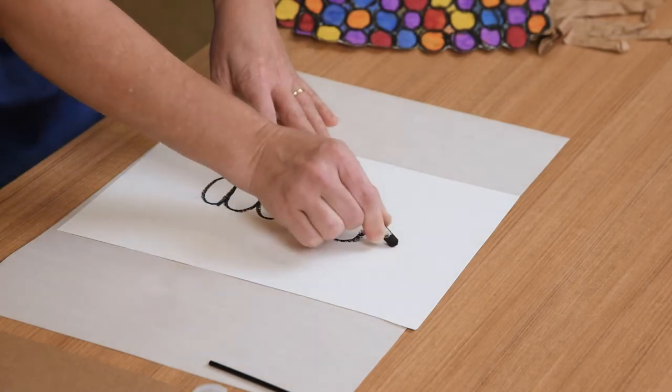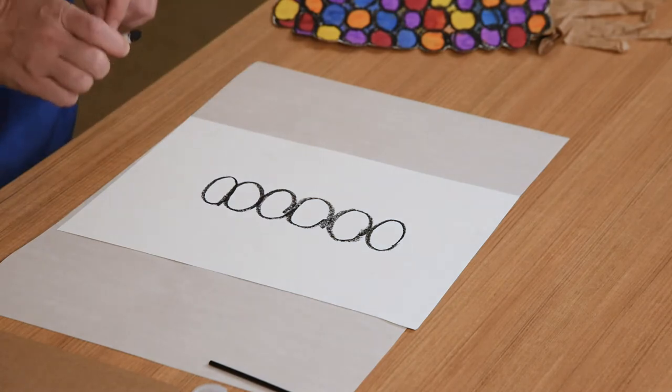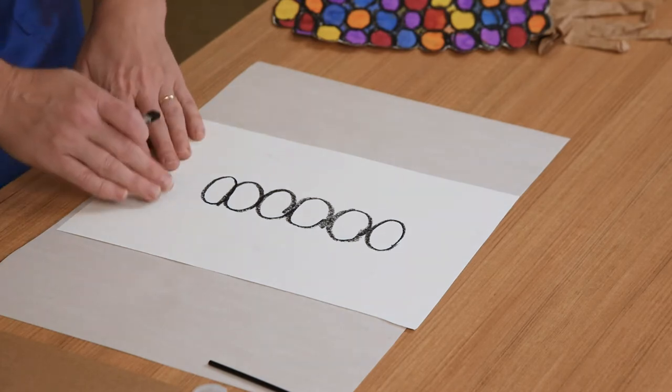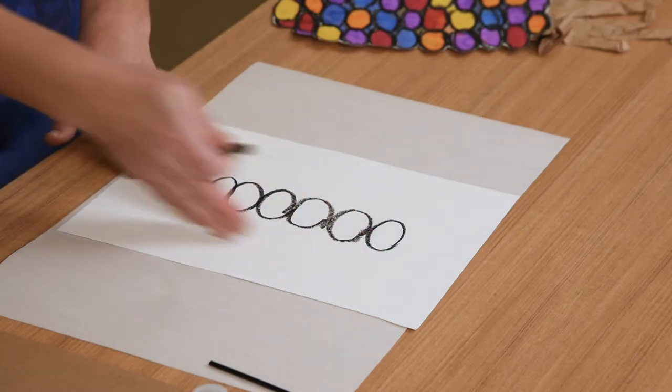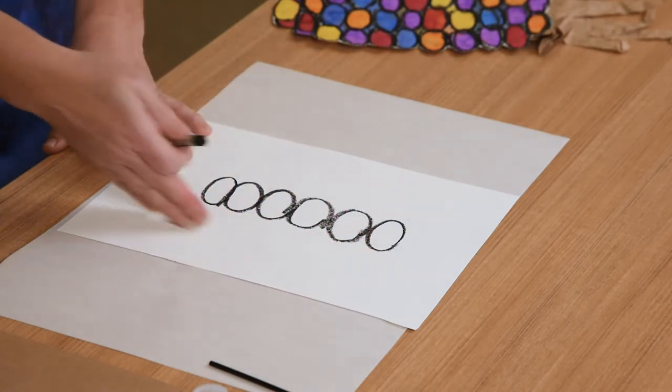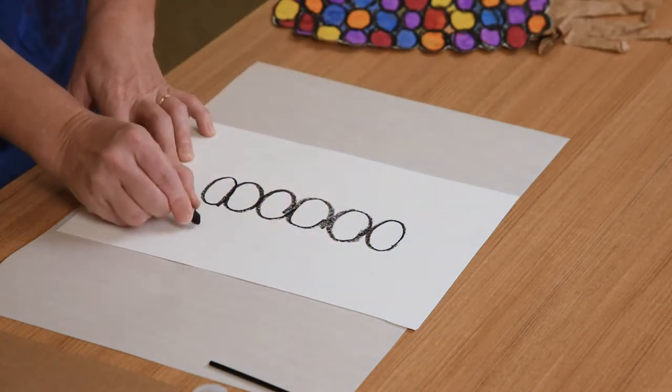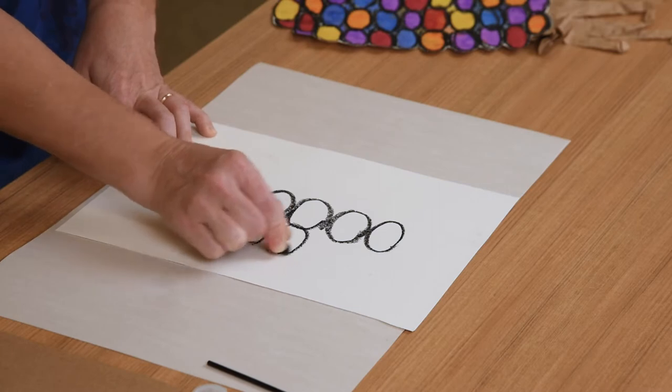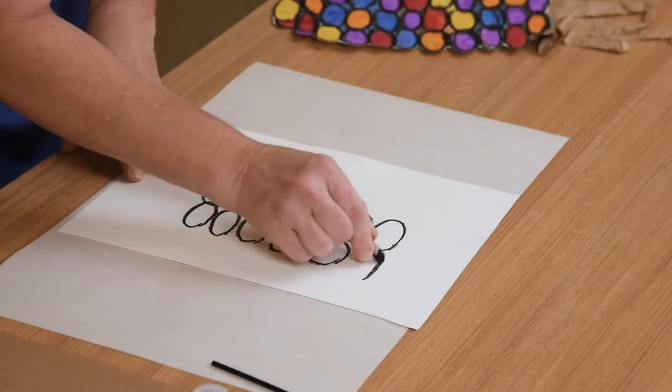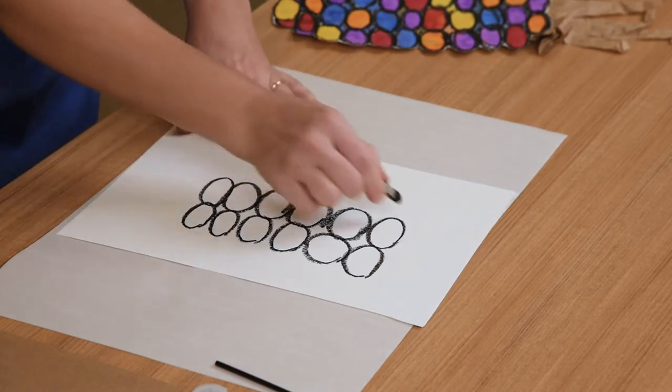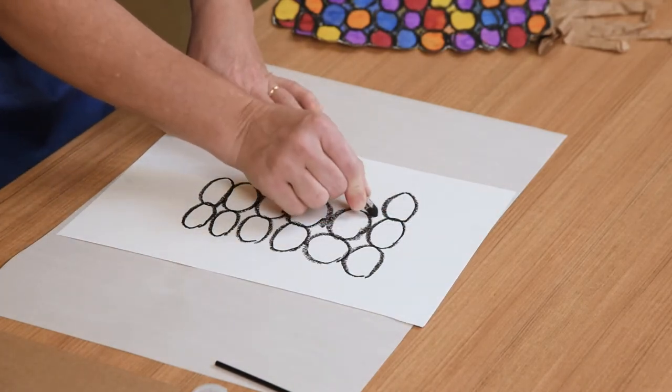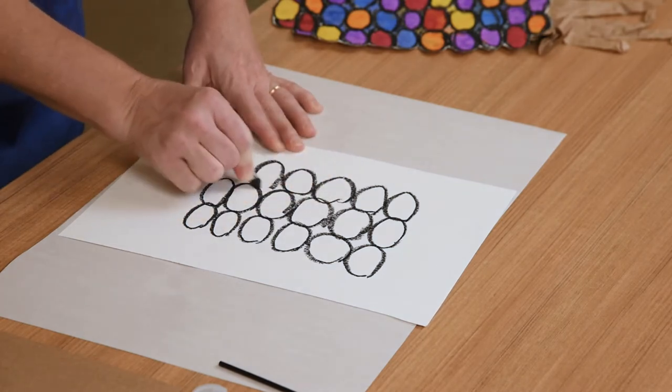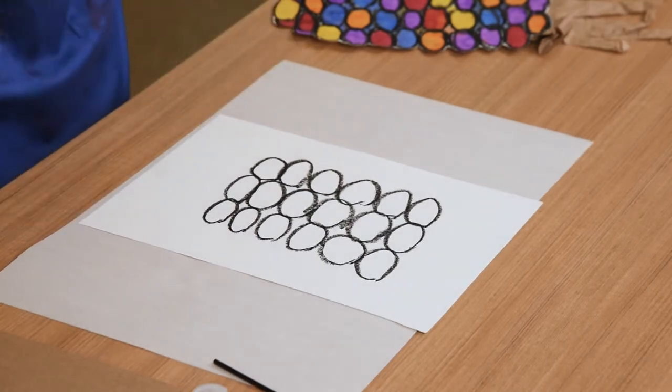These should look like rows of corn kernels. Now that I have my first row established, I'm going to come in and draw another column of ovals on the right and on the left. They can be touching or if there's a little bit of space between them, that's okay. They may not all be exactly the same shape, that's okay. Corn kernels are not all exactly the same shape, so that'll just give it a very natural appearance.